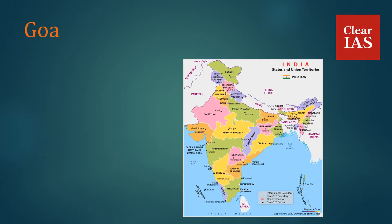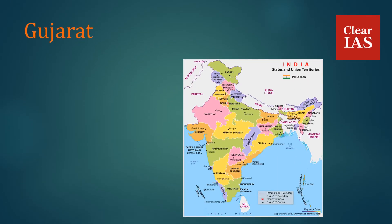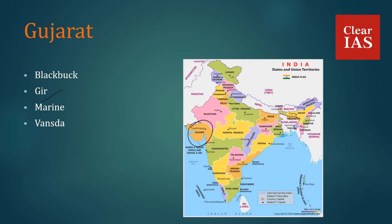Goa has one National Park: Mollem National Park. In Gujarat, we have Blackbuck National Park, Gir National Park — which is famous for its Asiatic lions — Marine National Park, and Vansada National Park.